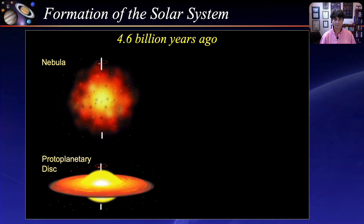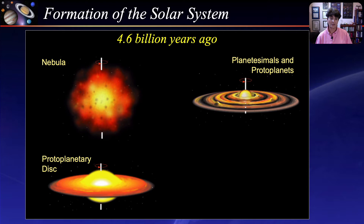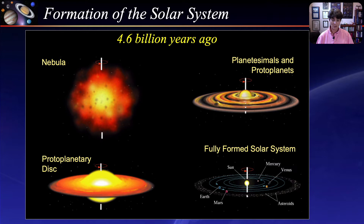Most of the material coalesces towards the center, forming the protosun, while continuing to increase in pressure and temperature. Meanwhile, the material in the outer edge of the disk coalesces and clumps together to form planetesimals, protoplanets, and eventually planets. When the mass, temperature, and pressure in the protosun is high enough for nuclear fusion to begin, the sun is born. The resulting blast of solar wind and radiation sweeps through the newly formed system, clearing out most of the remaining dust, leaving a fully formed solar system with all the planets revolving in the same direction and approximately on the same plane around the central sun.